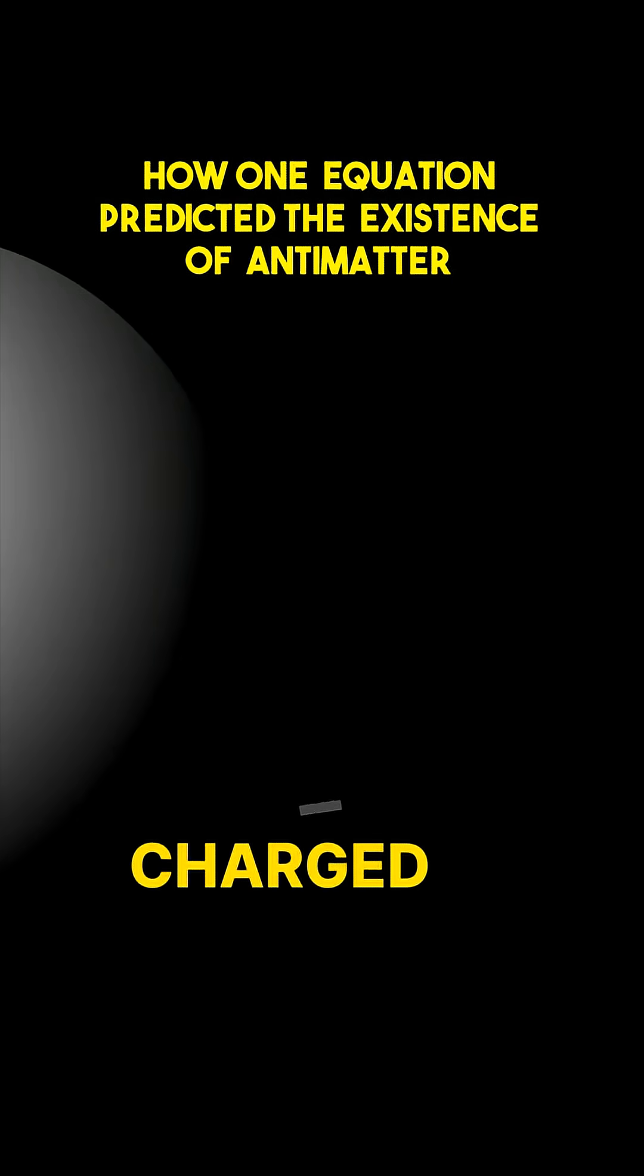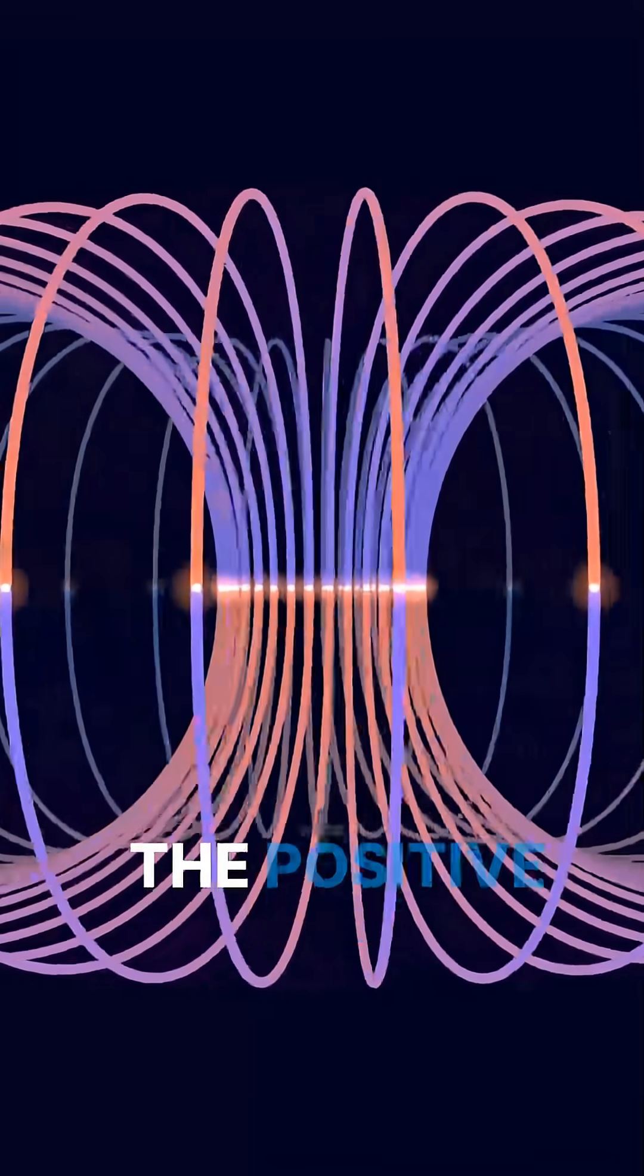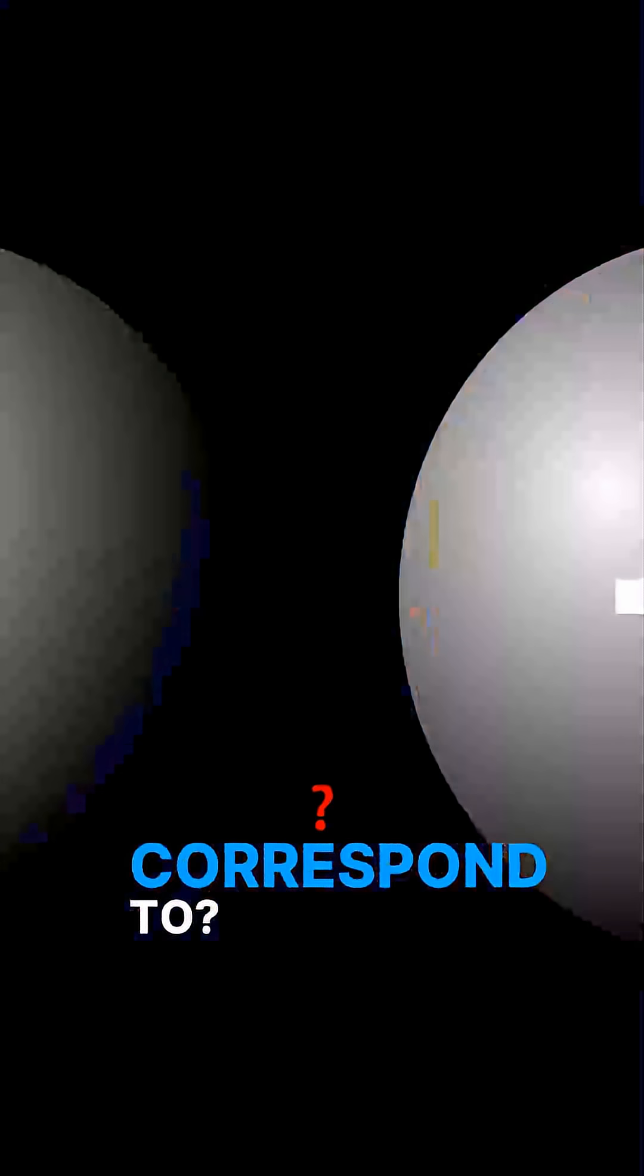One solution is negatively charged and clearly represents the electron. But just what does the positive solution correspond to?